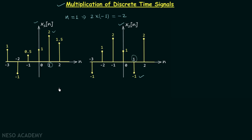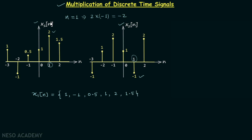Now let's quickly perform the multiplication. I will first write down signal x1n. From the plot it is equal to 1, minus 1, 0.5, 1, 2, 1.5, and this pattern repeats. x1n is equal to 1 when n is equal to 0, so we will put one arrow mark here.